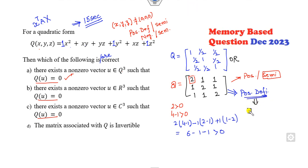What does positive definite mean? It means there does not exist any U which is non-zero such that Q of U is 0, but the question says there exists. So that means this option is canceled out. There does not exist any U in R, which means there does not exist any U in Q.